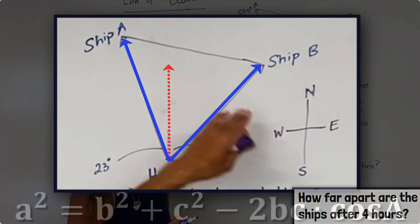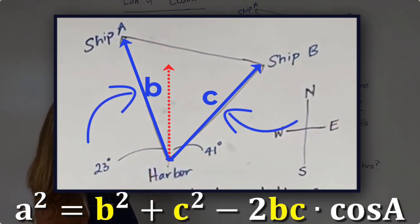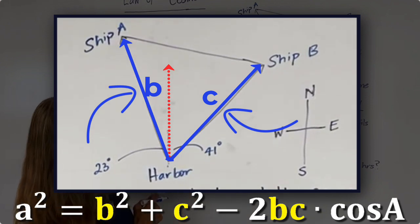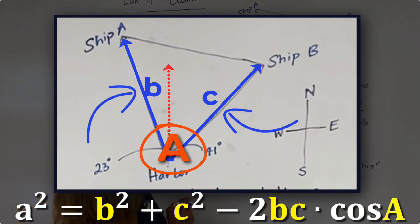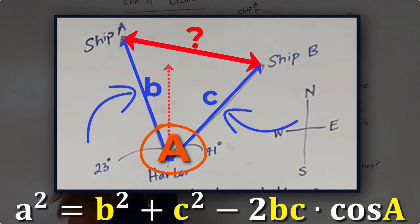Recall our law of cosines says as long as I have two sides of an oblique triangle and the included angle—so this would be our b and our c, and the included angle would be angle A—I can figure out the third measurement, the third side.